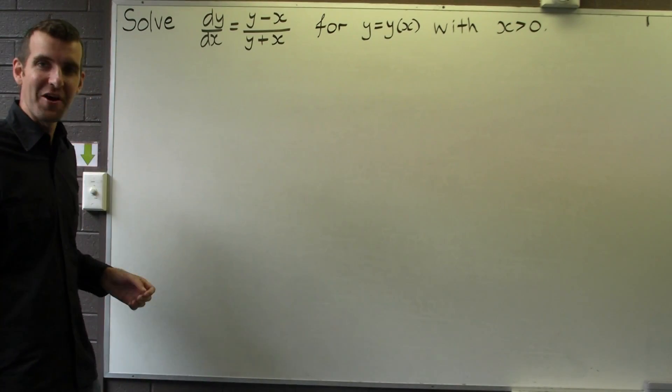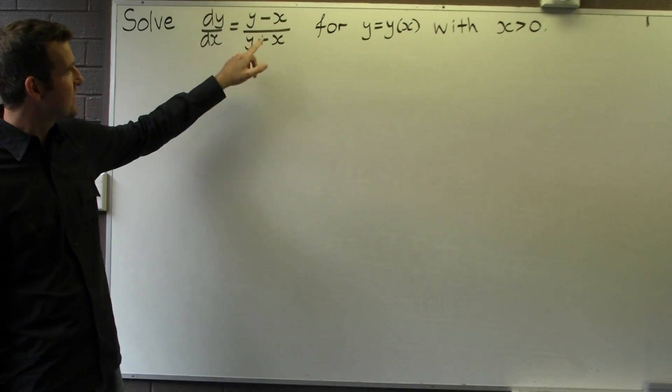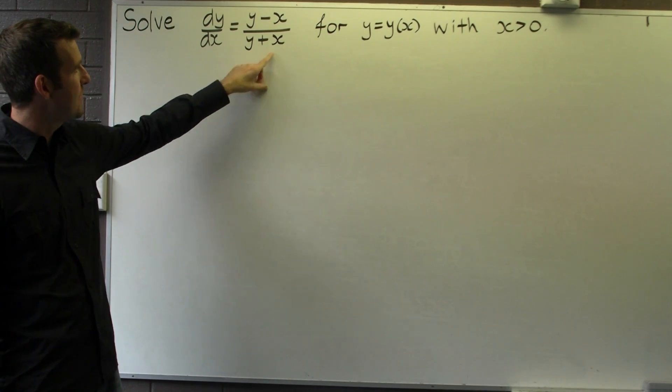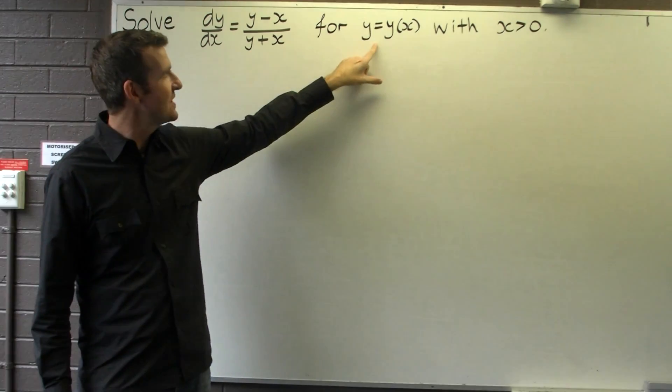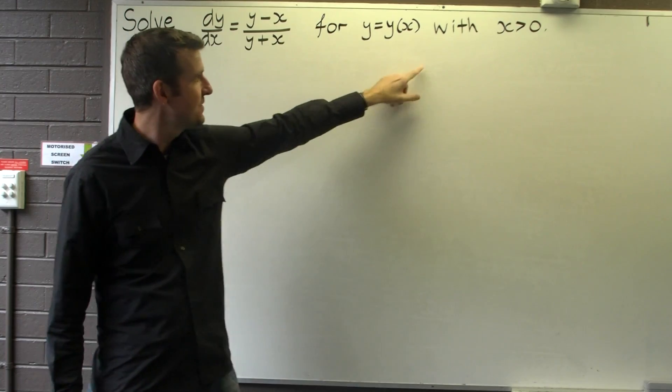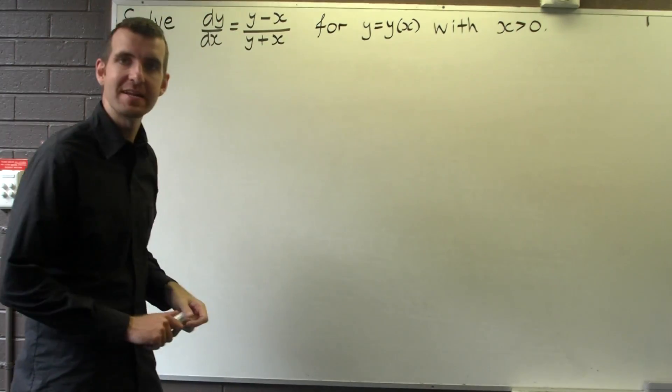So let's consider the following ODE: dy/dx equals (y minus x) all over (y plus x), and we want to find the unknown function y for x greater than 0.